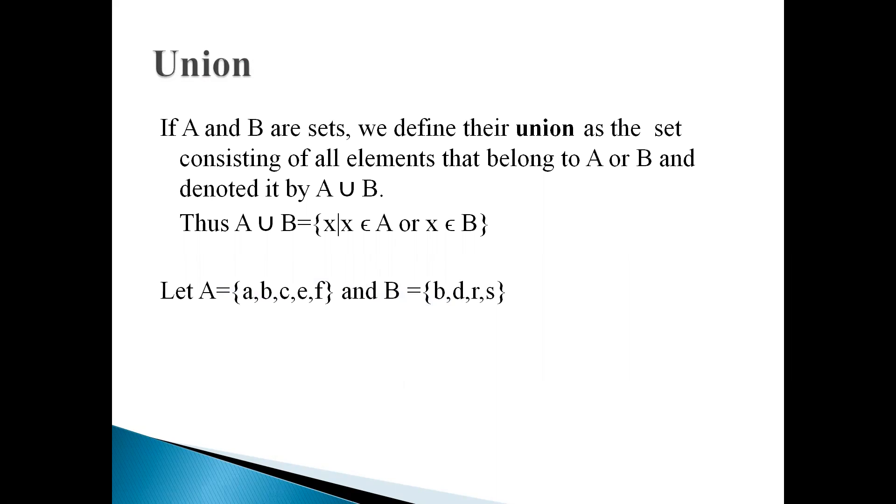Then for example, if we have two sets, set A, its contents or elements are A, B, C, E, F and the set B's contents are B, D, R and S. Here B element is common in both sets. So if we want to find out A union B, then solution is A, B, C,